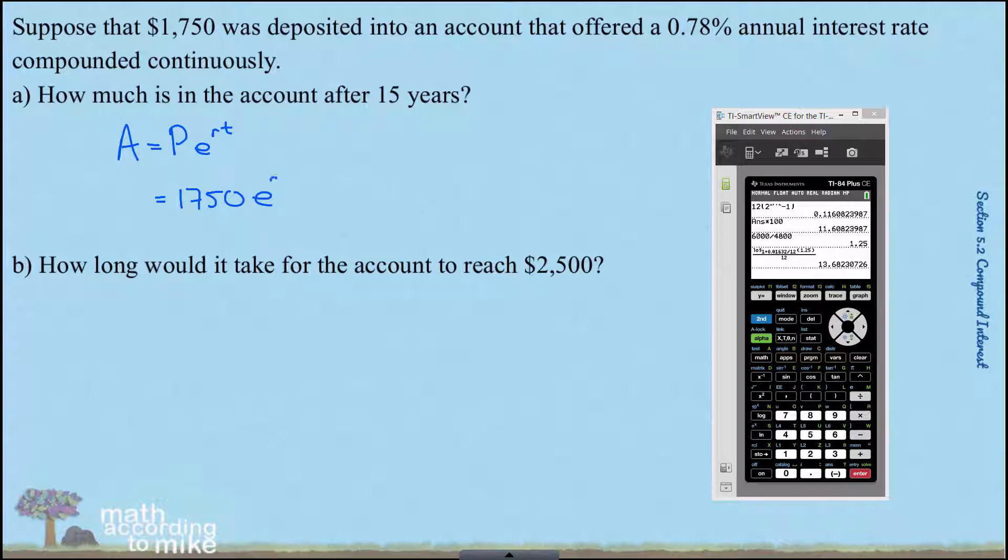Also be careful, R is 0.0078. Just as before, you have to move that two places to the left to go from a percent to a decimal. And T is 15.